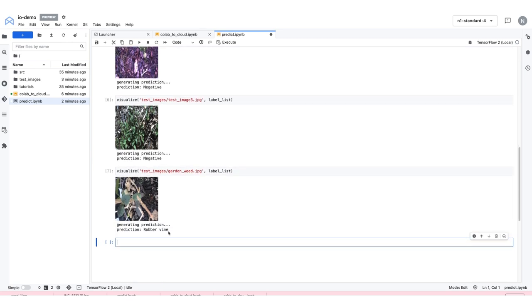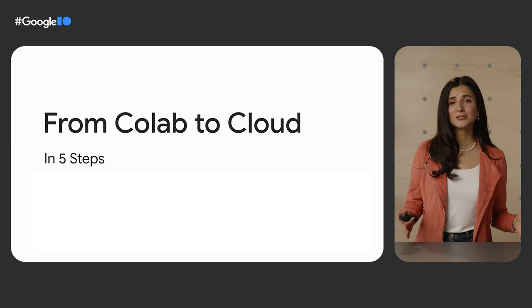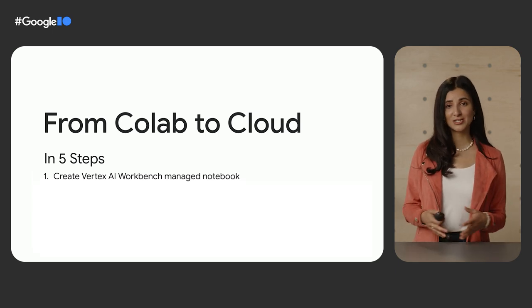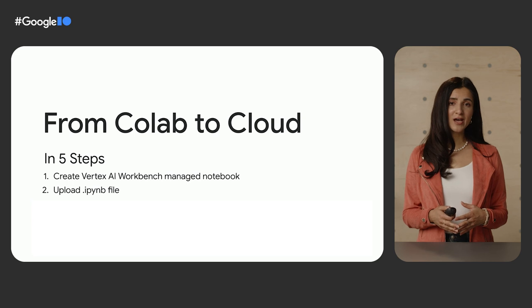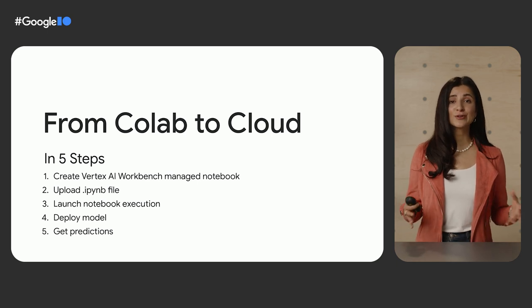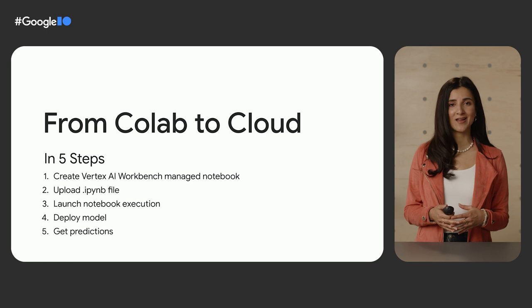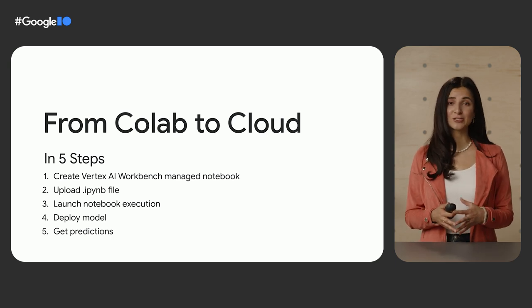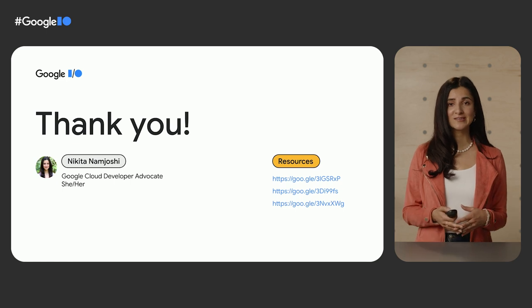It looks like I might have a species called rubber vine appearing in my garden. The steps we took today were to create a Vertex AI Workbench managed notebook, upload our .ipynb file, launch a notebook execution, deploy the model, and lastly, get predictions from that model. With this framework in mind, I hope you start thinking about how you can build your own machine learning applications with Vertex AI. There are tons of other features in Vertex AI to explore, and if you want some more hands-on experience, be sure to check out these code labs. If you built something interesting with Vertex AI in notebooks, definitely let me know. I'll see you next time — thanks for watching!